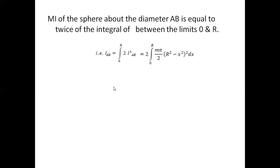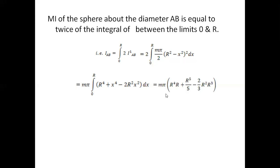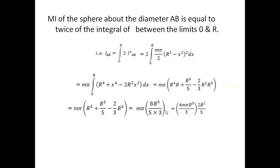Substituting equation 4 and expanding (R² − x²)² using the formula (a − b)² gives R⁴ + x⁴ − 2R²x². On integration and substituting the limits we get πm(R⁵ + R⁵/5 − 2R⁵/3), which simplifies to πm · 8R⁵/15. Splitting 8 as 4×2 and R⁵ as R³·R², we identify that 4πmR³/3 is nothing but the total mass M from equation 1.